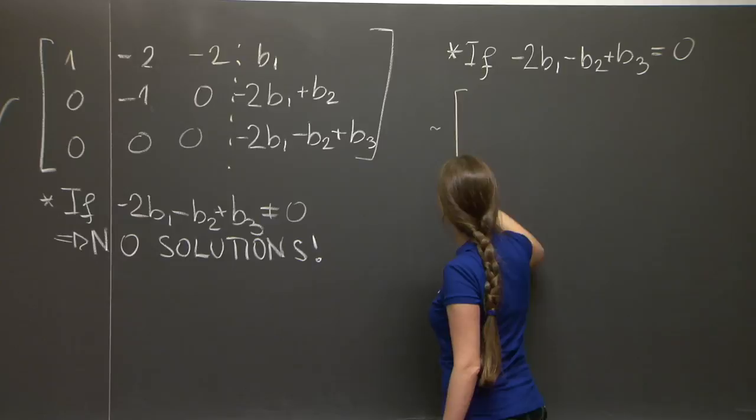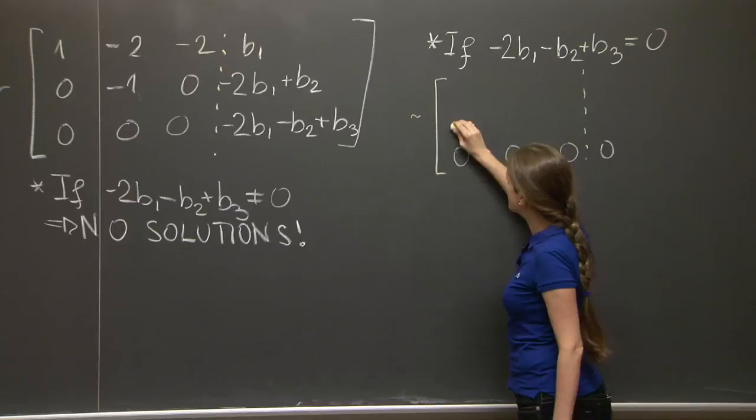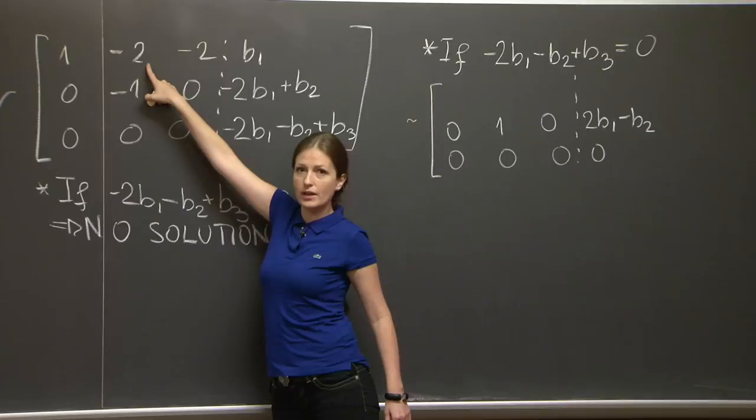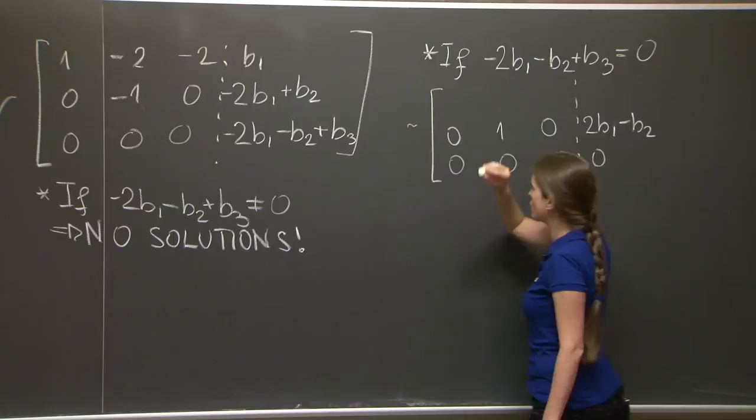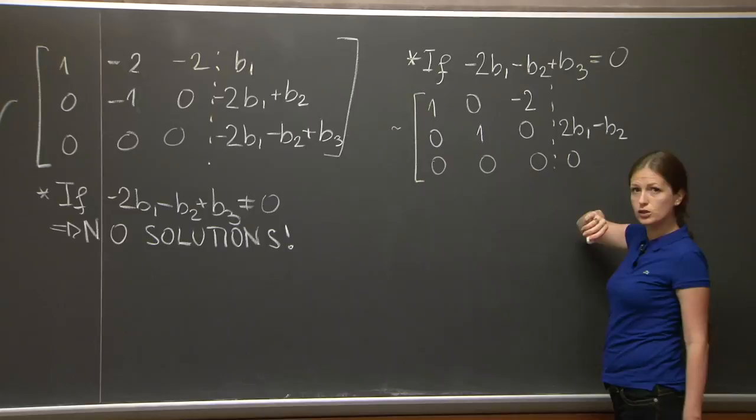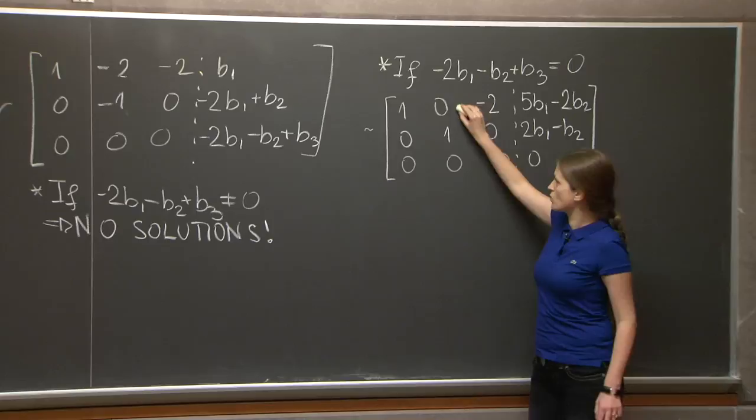So in this case, we get, let me write it from the last row, which now becomes 0, 0, 0 equals 0, which is fine. The second row becomes 0, 1, 0, 2 b1 minus b2. And the first one, to get rid of this minus 2, we multiply this row by negative 2 and add it to the first one. We get 1, 0, negative 2. And here we get b1 plus 4 b1, which is 5 b1 minus 2 b2.